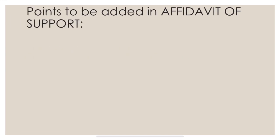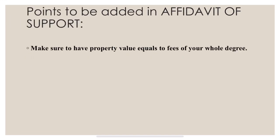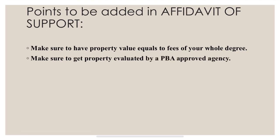Key points to be added in the affidavit of support: make sure to have property value equal to or covering the fees of your whole degree. For example, if you have a bachelor's program, make sure your property value covers the entire tuition. Also, make sure to get the property evaluated via a PBA approved agency — they are listed on official portals and are considered satisfactory by visa officers.